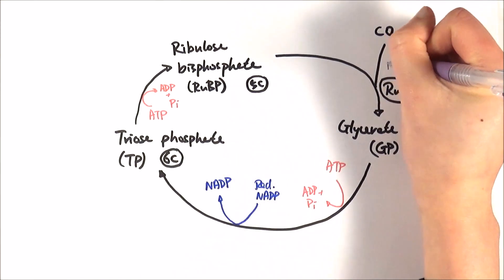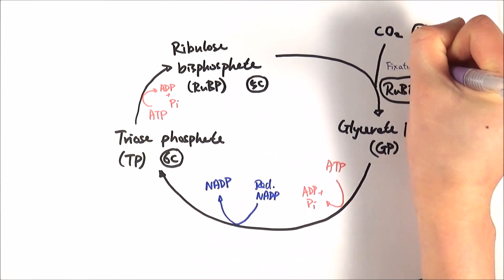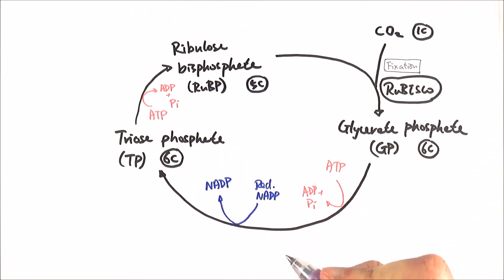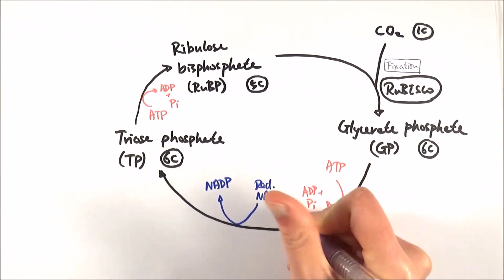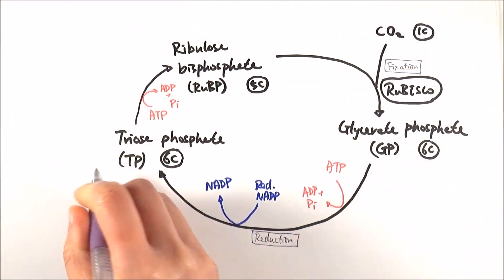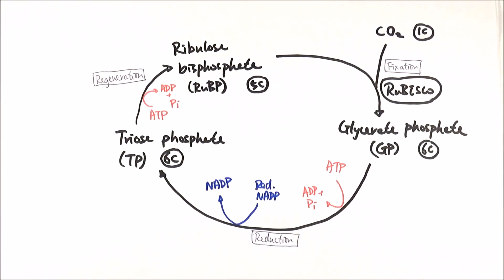So first of all, here we got fixation, which is our first reaction here. And then we get reduction because of the reduced NADP. And then finally here, we got regeneration of RuBP. And those are the three stages of the Calvin cycle.